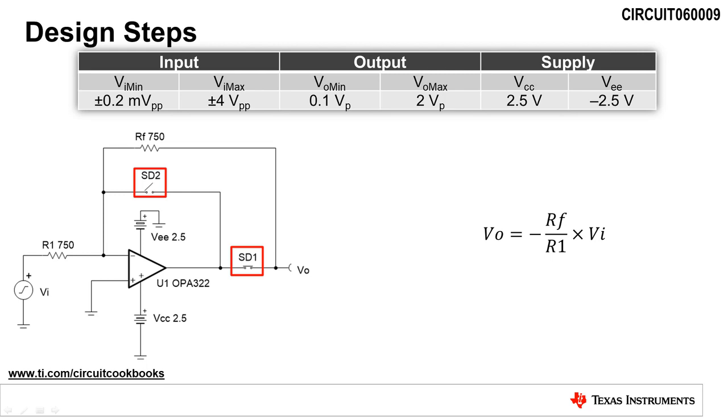Next, we will analyze the circuit for negative input signals. Negative input signals reverse bias SD2 and forward bias SD1. Therefore, SD2 is represented as an open circuit, and SD1 is represented as a short circuit. The circuit is now in an inverting configuration, so the output is equal to negative RF divided by R1 times the input voltage VI.